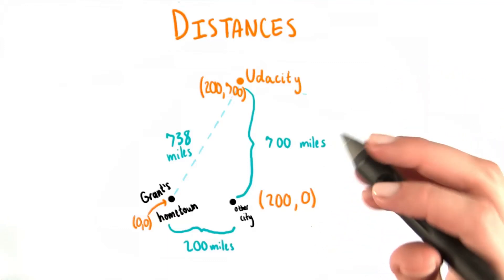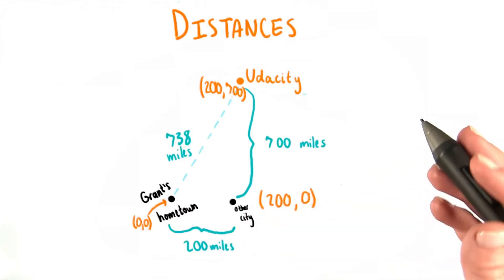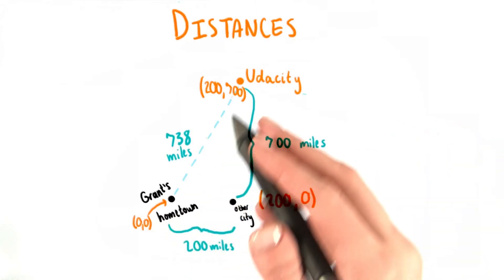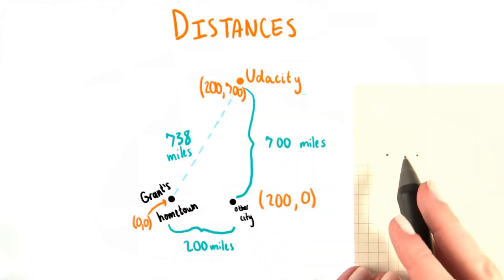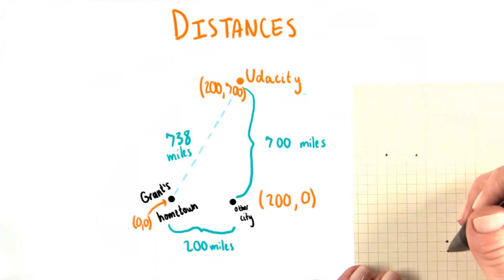Over the course of this lesson, we've discovered a super powerful tool because of Grant's airplane situation. We can now find the distance between any two points on a graph. And I don't just mean points that we can count squares on graph paper to find the distance between. I mean any two points on a coordinate plane.